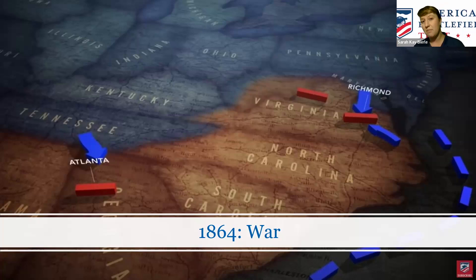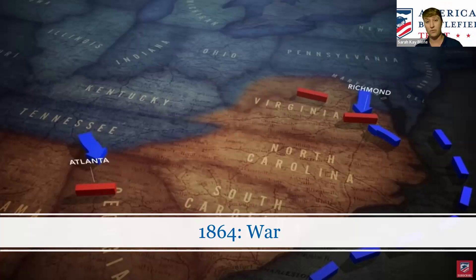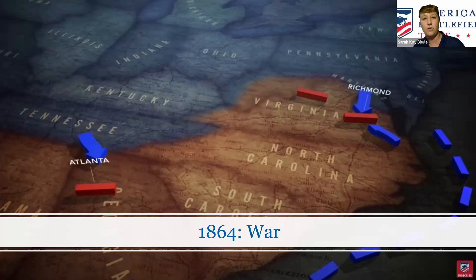1864 saw big campaigns: the Overland Campaign through central Virginia and the Atlanta Campaign, resulting in the capture of that Georgia city. These are campaigns with large, costly battles, and all of this is going to play into the political scene that unfolds in 1864.